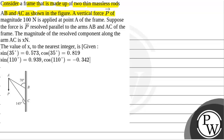A vertical force P of magnitude 100 N is applied at point A of the frame. Suppose the force P is resolved parallel to arms AB and AC of the frame. The magnitude of the resolved component along the arm AC is X N. The value of X to the nearest integer is given: sin 35 is 0.573, cos 35 is 0.819, sin 110 is 0.939, and cos 110 is minus 0.342.